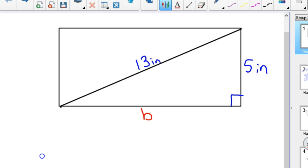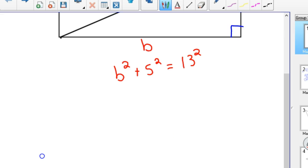So again, we don't know the base, so we'll use Pythagorean Theorem. You might realize this is a Pythagorean Triple, but if you didn't know that, that's okay, you just use Pythagorean Theorem. B squared plus 5 squared equals 13 squared. You finish this up: b squared plus 25 equals 169. Subtract off the 25, b squared equals 144.